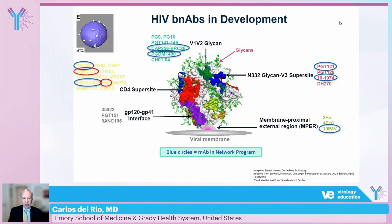In this cartoon you can see where the different BNAbs attack: the V1/V2 glycan, the V3 super site, the membrane proximal external region, the GP120-GP41 interface, and the CD4 super site, along with the different BNAbs developed against each specific site. Those marked with a circle are ones the HVTN — the HIV Vaccine Trials Network — and the HPTN — the HIV Prevention Trials Network — are studying for HIV treatment and prevention.